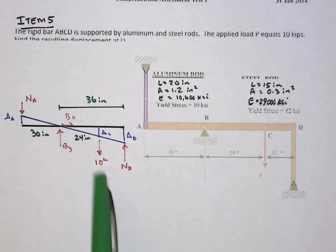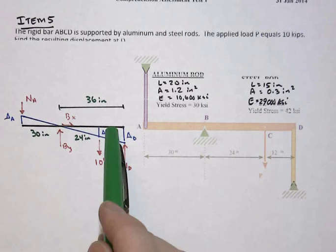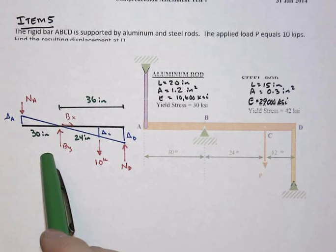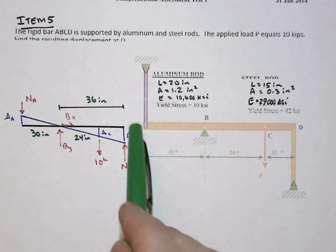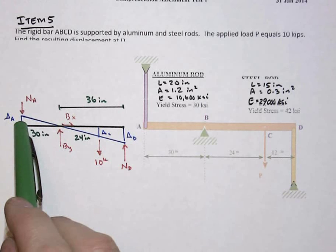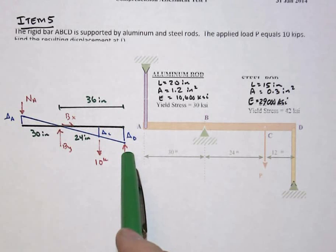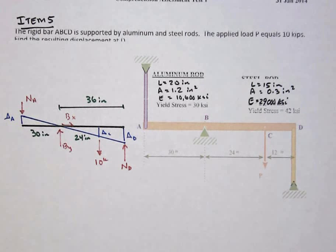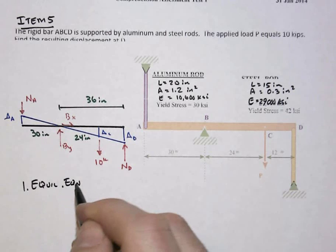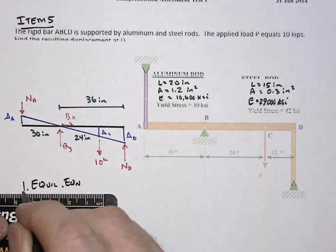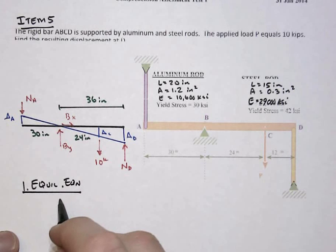I've already drawn the free body diagram of the rigid bar ABCD over here to the left along with the associated deformations. With this downward applied 10 kip load, it will cause the rigid bar to want to rotate in a clockwise fashion, squeezing the aluminum rod which means it pushes back on bar ABCD. As well it also squeezes the steel rod, pushing back on the rod, and then we have the two reactions at B: BY and BX.